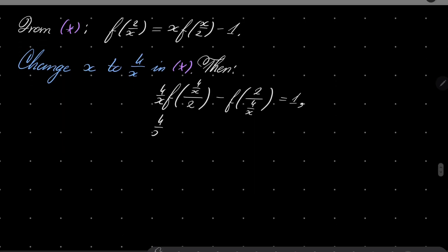Which is 4/x times f(2/x) minus f(x/2) equals 1.